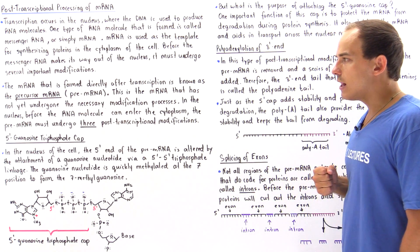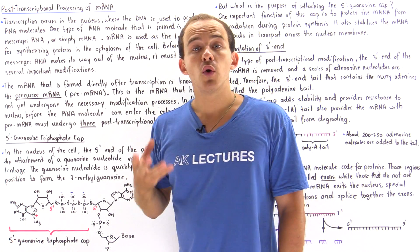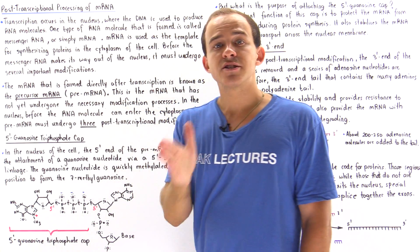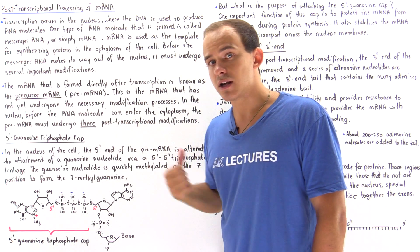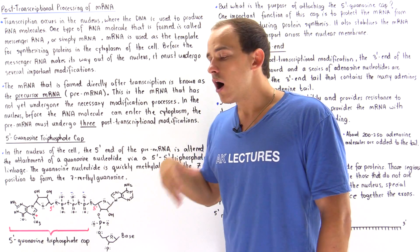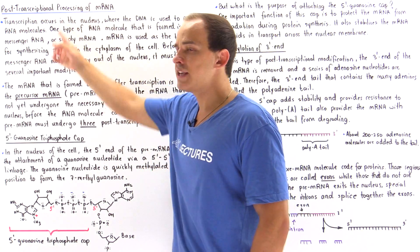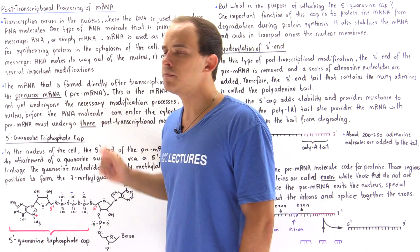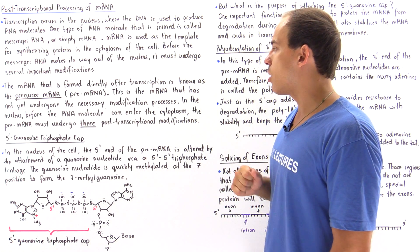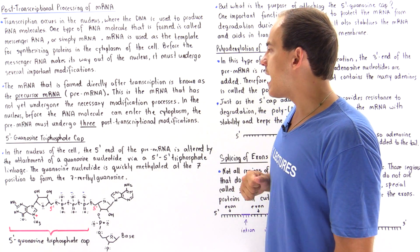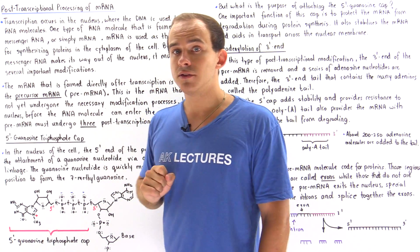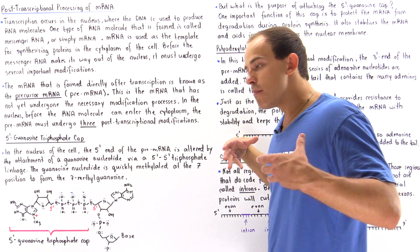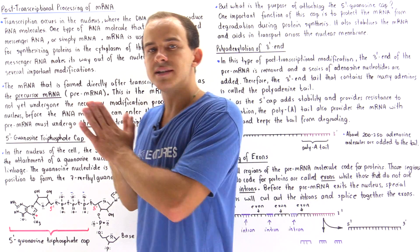Within the nucleus of our cell, we produce a molecule known as the precursor mRNA. The mRNA that is formed directly following the process of transcription, before any type of post-transcriptional modification actually took place, is known as the precursor mRNA or pre-mRNA. This is the mRNA that has not yet undergone the necessary modification processes needed for the molecule to exit the nucleus and enter the cytoplasm.